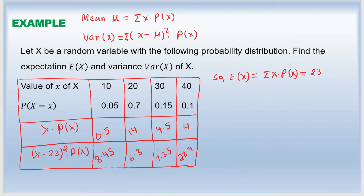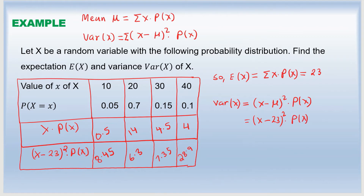The variance is the sum of all those values: 8.45 + 6.3 + 7.35 + 28.9 = 51. So the variance of the random variable x, calculated as the sum of (x − 23)² × P(x), equals 51.